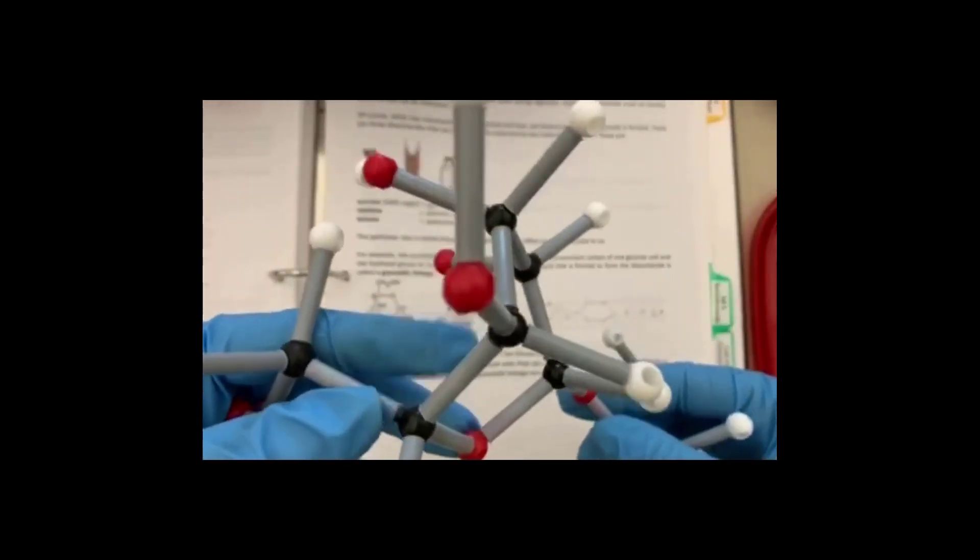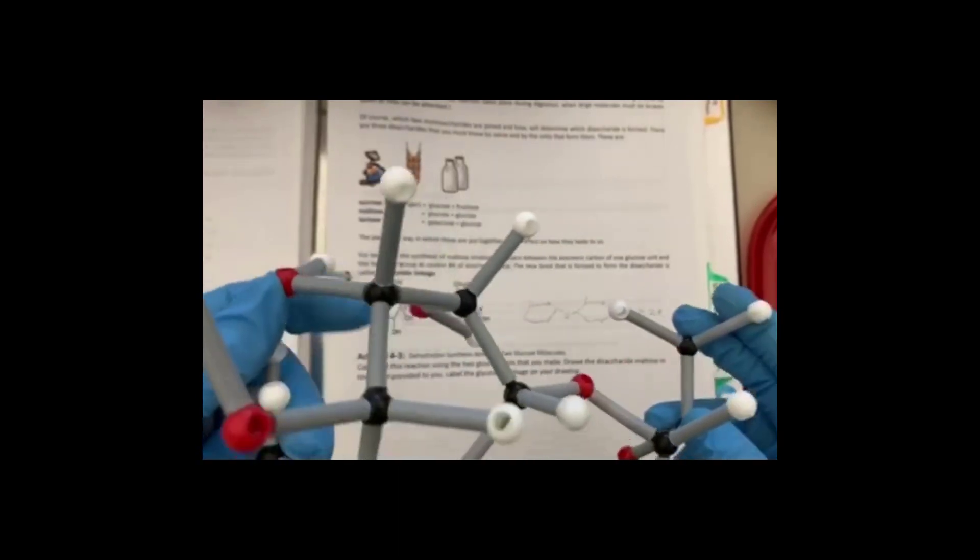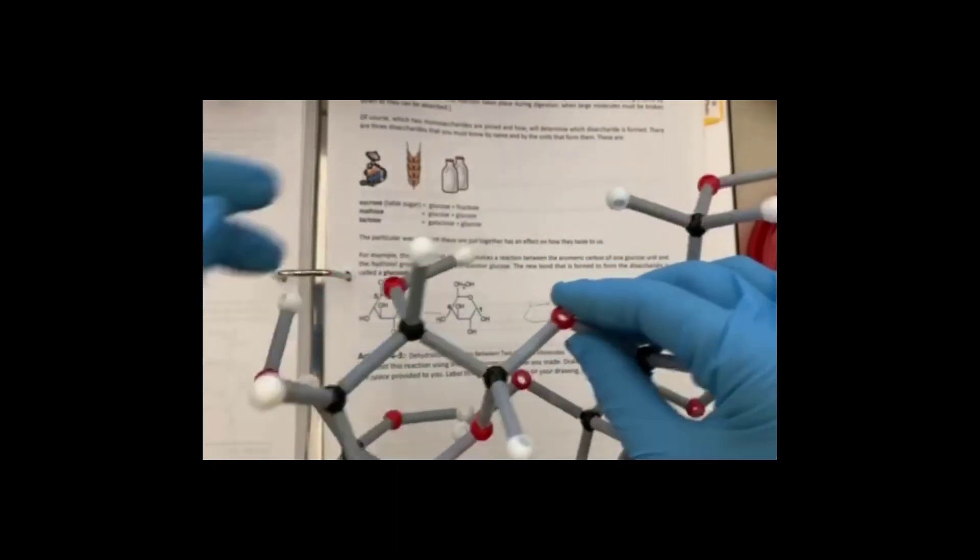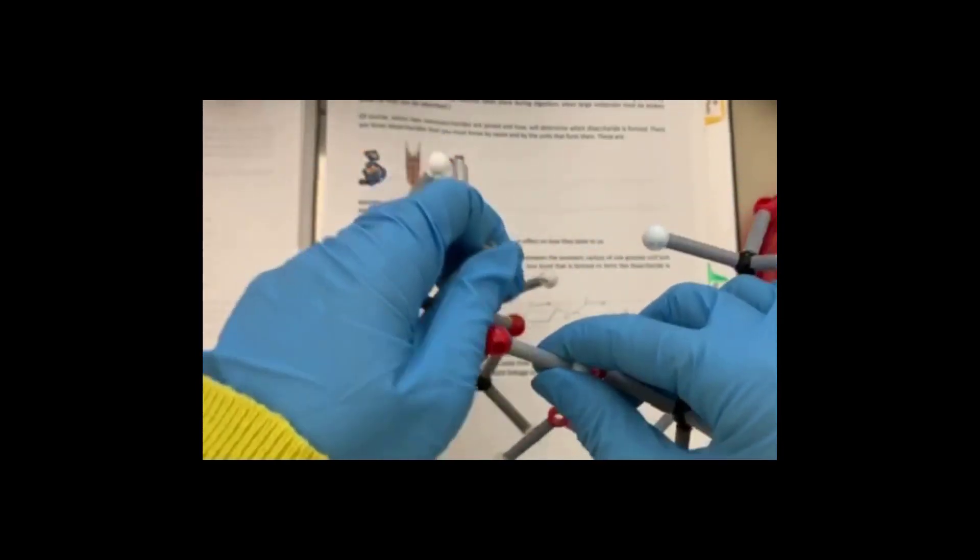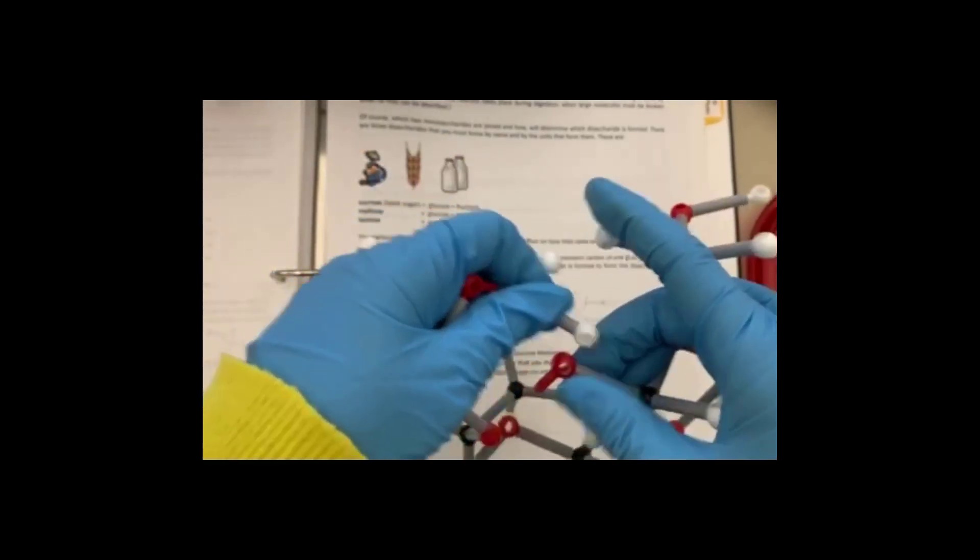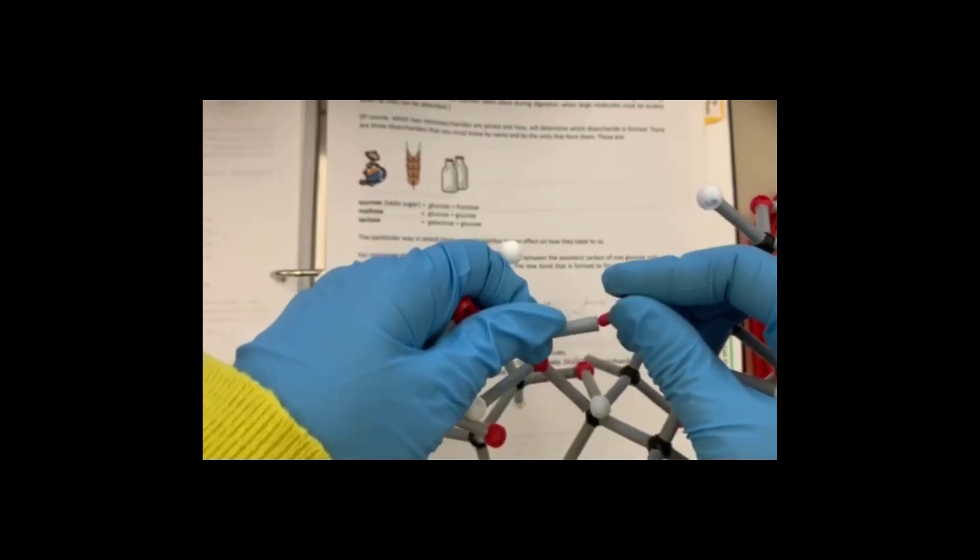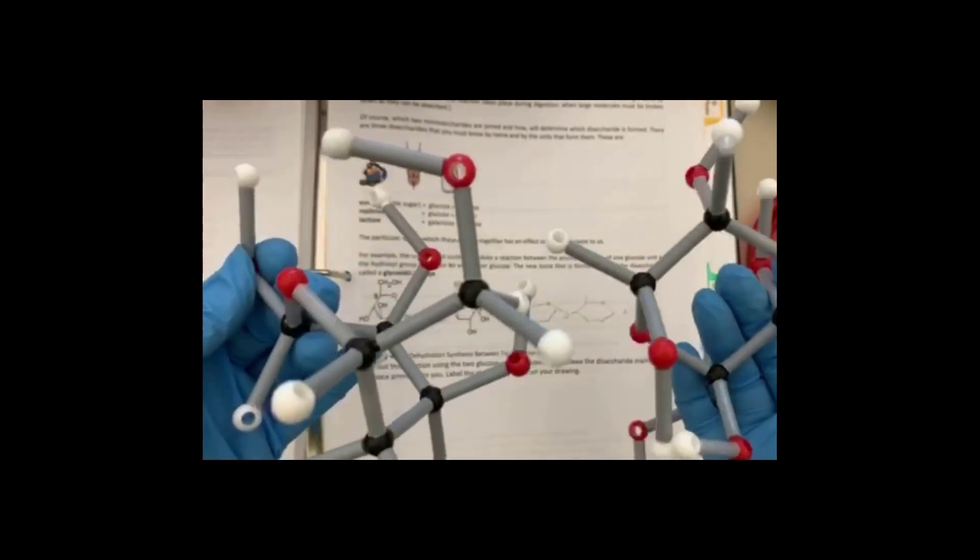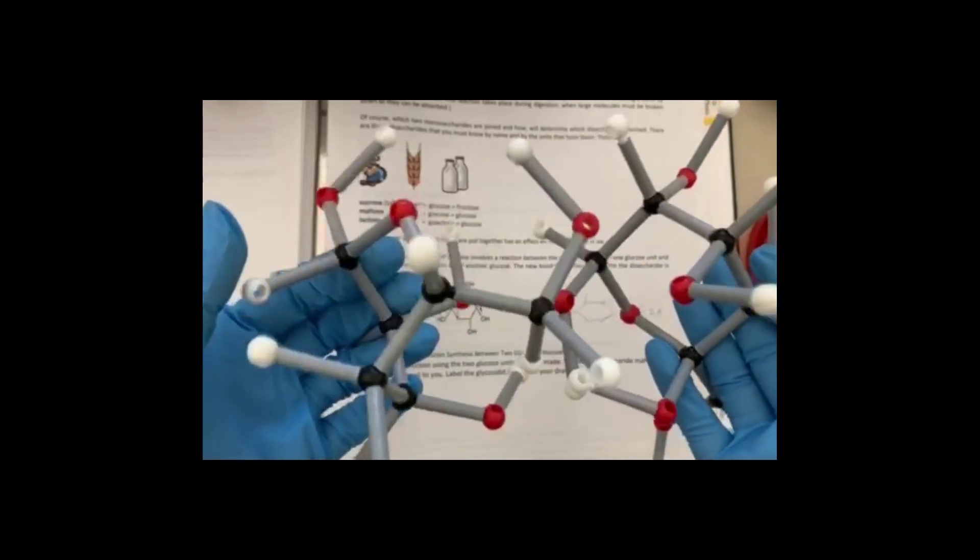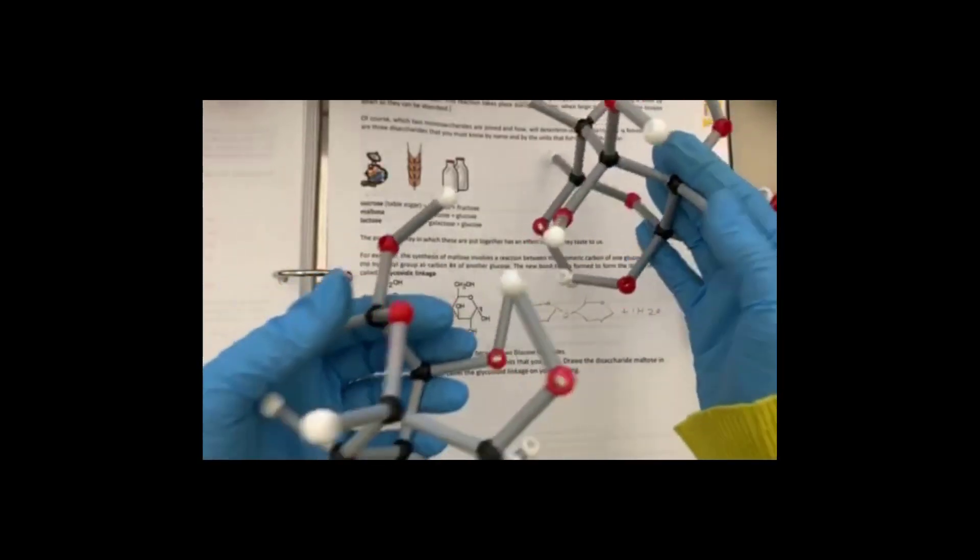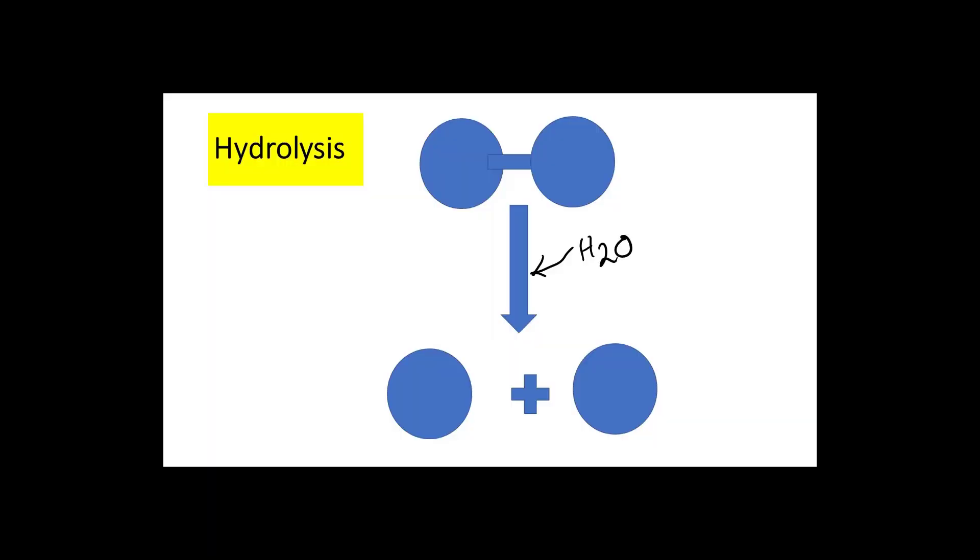For example, when you eat food, you have some digestive enzymes that can break these bonds. So they will add just water to the bond and it breaks. And they break the disaccharide or dimer into two monomers. The name of the process that breaks down the bond, we call it hydrolysis.